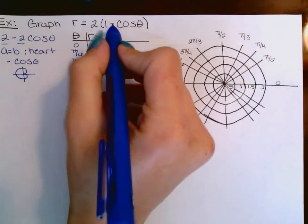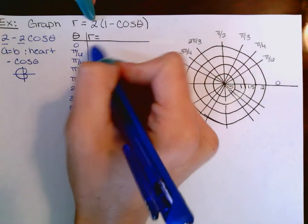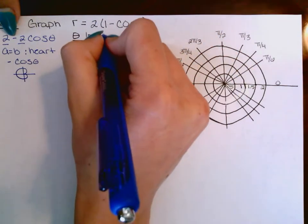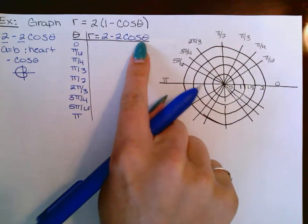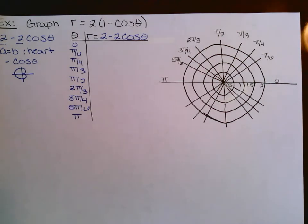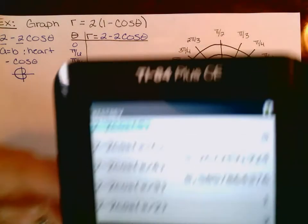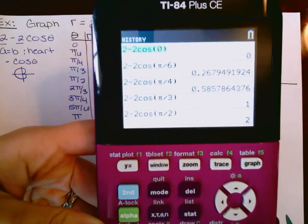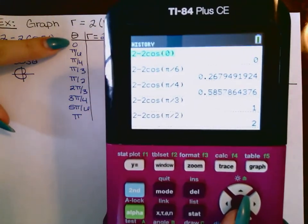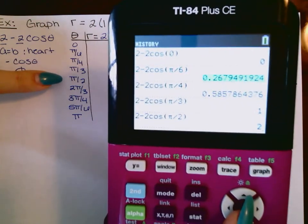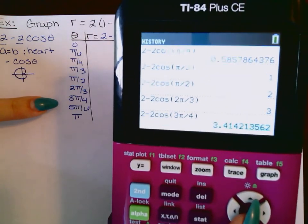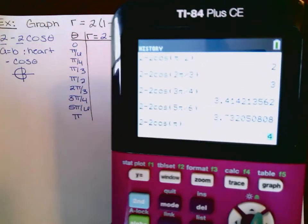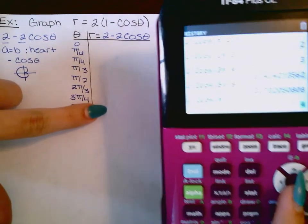When you plug into the calculator, you can use either the original 2(1 − cosθ) or the distributed form 2 − 2cos(θ) — either one works out the same way. I'm going to plug in θ values: 0, π/6, π/4, π/3, π/2, 2π/3, 3π/4, 5π/6, and π — all into this function. Make sure you are in radian mode. I'll take a moment and plug each of these thetas in and get out all of my r values.